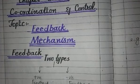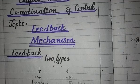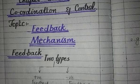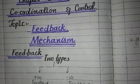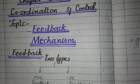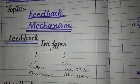The feedback mechanism is a mechanism by which hormones released in our body do not work at a constant rate. The feedback mechanism is divided into two types: the first is the positive feedback mechanism, and the second is the negative feedback mechanism.